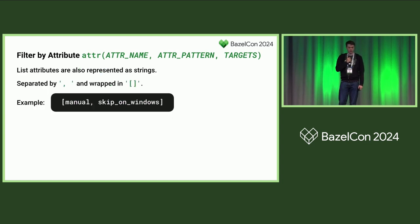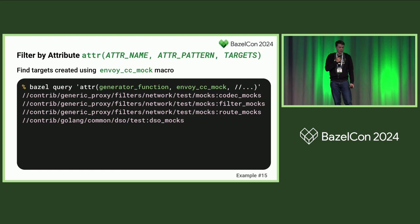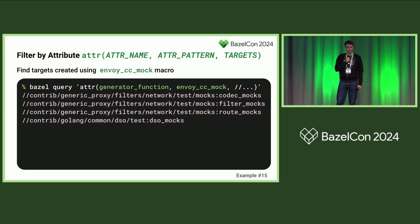If you want to match against arrays or lists, this is how they look when turned into strings — so you need to figure out your regex to match something precisely. Another thing we can do with the attribute filter is find targets generated using a specific macro. This might not be obvious, but you cannot use the kind filter here because the macro generates a cc_library kind. So to know how the target was generated, you use the special attribute called generator_function and filter by it. In Envoy, there are just four targets generated by this macro.